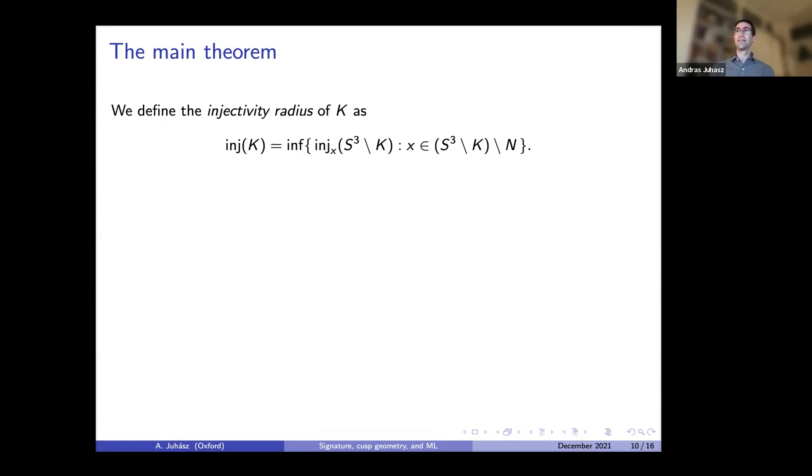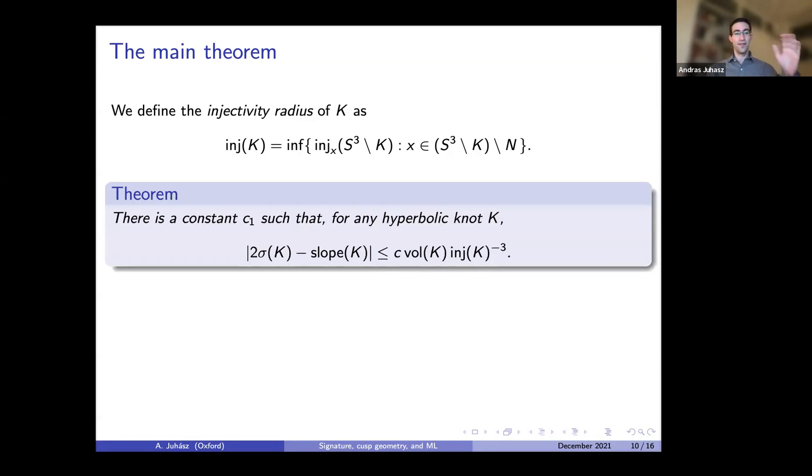So what is the theorem that we managed to prove? First, let me define the injectivity radius of a knot. This is defined to be you take your knot and you remove the maximum cusp, and then you take the injectivity radii of the points of this remaining manifold, and you take the infimum of that. The theorem is that there is some constant such that for any hyperbolic knot K, twice the signature minus the slope is bounded from above by constant times the volume divided by the cube of the injectivity radius.